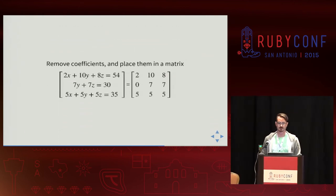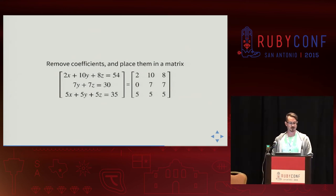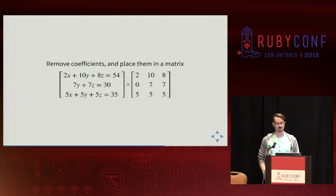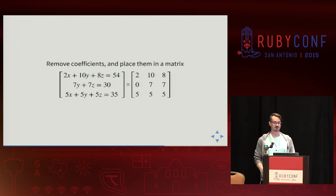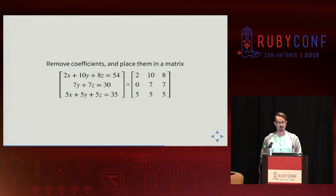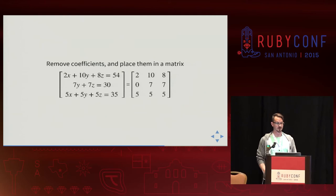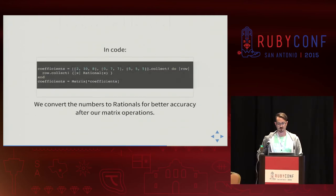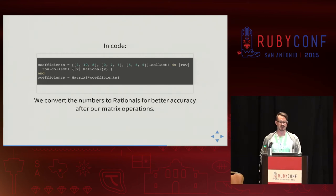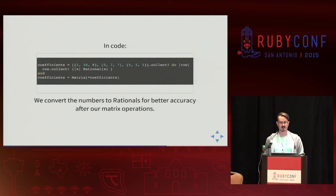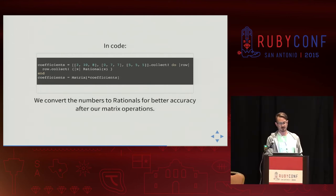Let's assume we have three equations and we want to solve for the variables. We can use matrix algebra to solve this system with the Ruby matrix library. The first step — if you remember solving systems of linear equations from school — is to remove coefficients and place them into a coefficient matrix. So 2, 10, and 8 become the first row; 7 and 7 are for y and z with no x value so we assign 0 in the second row; then the third row gets three fives. In code, it's just setting up a multidimensional array, collecting values with typecasting to Rational to avoid rounding errors.